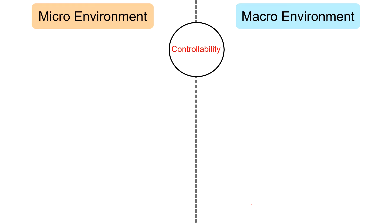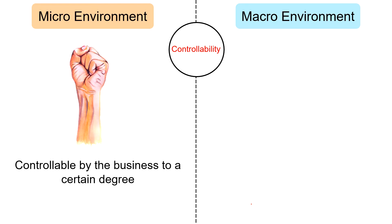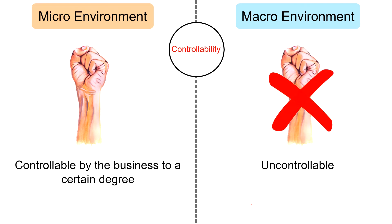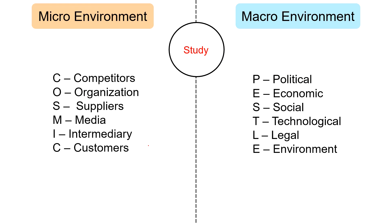Regarding controllability, micro environmental forces are controllable by the business to a certain degree, whereas macro environmental forces are not controllable. The study of micro environment is called COSMIC analysis, where C stands for Competitors, O for Organization, S for Suppliers, M for Media, I for Intermediary and C for Customers. On the other hand, the study of macro environment is called PESTEL analysis, where P stands for Political, E for Economic, S for Social, T for Technological, L for Legal and E for Environmental.